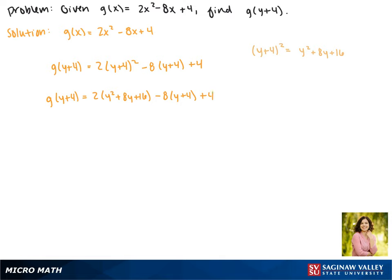And now we'll distribute. This gives us g(y+4) equals, distributing our 2 gives us 2y² + 16y + 32, and distributing our negative 8 gives us -8y - 32 and then plus 4.